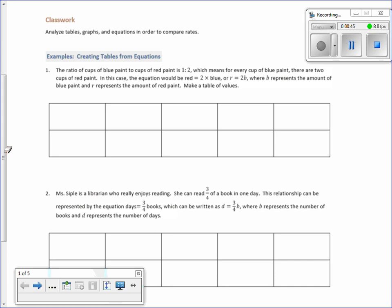So the ratio of cups of blue paint to red paint is one to two, which means for every cup of blue paint there are two cups of red paint. So I would say cups of blue paint. And cups of red paint. If I have one cup of blue paint or two cups of blue paint or three cups of blue paint or four cups of blue paint, I need to find out how many red we have.